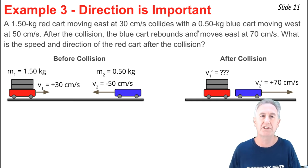You'll notice that for the blue cart before the collision, the velocity is negative 50 because it's moving west. After the collision, the velocity of the blue cart is positive 70 because it's moving west.